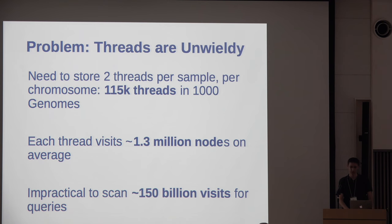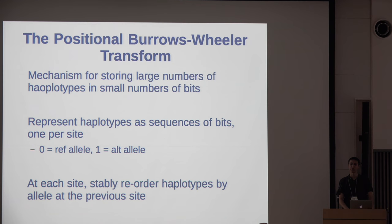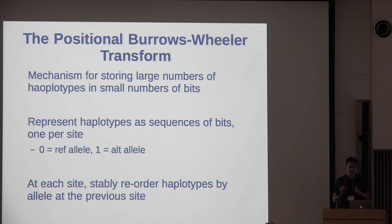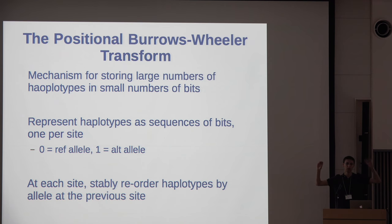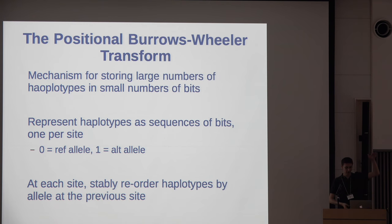So we're looking for alternative ways to store this. One thing that came up in our research is the positional Burrows-Wheeler transform from Richard Durbin — basically a way to store a lot of haplotypes in not a lot of space. You represent every haplotype as a sequence of bits, either 0 or 1 for ref allele or alt allele, arrayed along a linear sequence of sites. At every site, you take your collection of haplotypes, which you're keeping as a big list, and you reorder them by what value they had at the previous site — the zeros go first and then the ones.